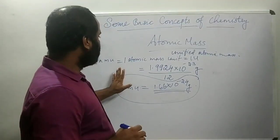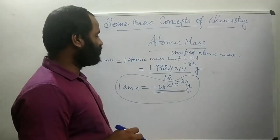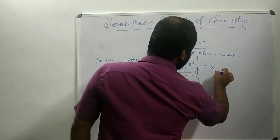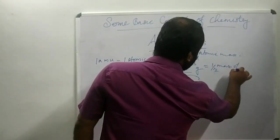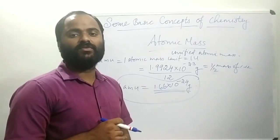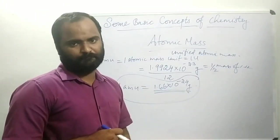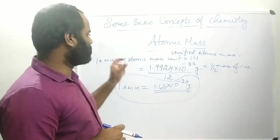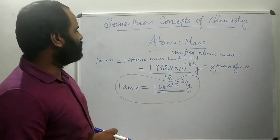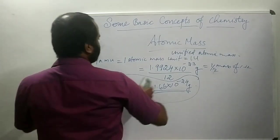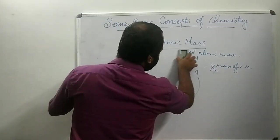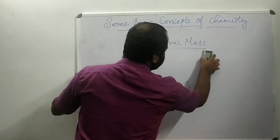So 1 amu is equal to 1/12th the mass of a carbon-12 atom. Because it is related to the carbon-12 atomic mass, it is known as relative atomic mass.